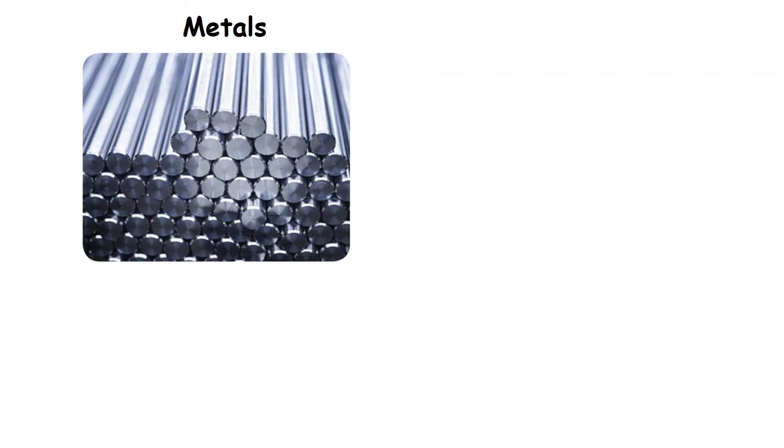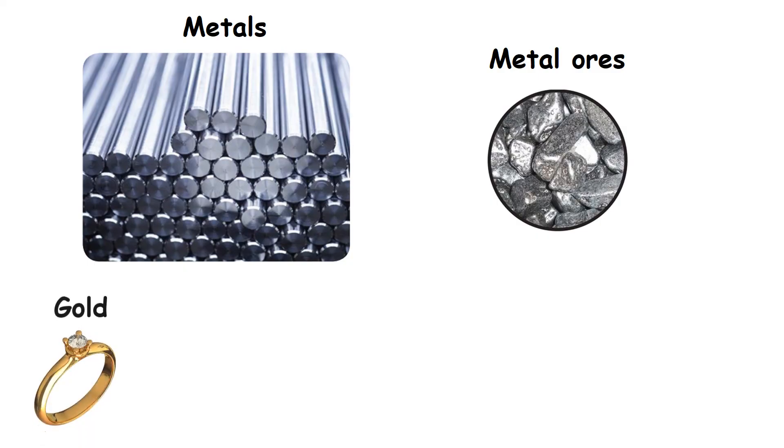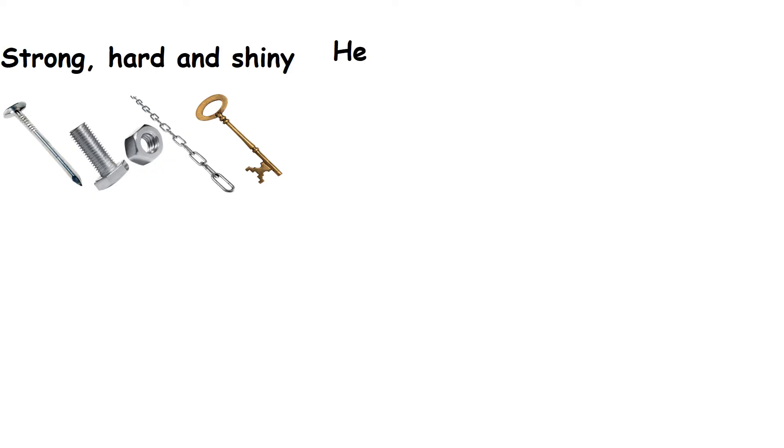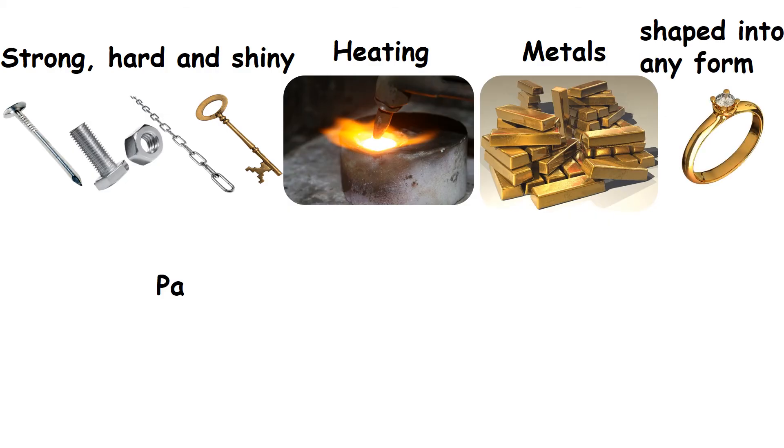Metals. Metals are materials got from metal ores. Example, gold, silver, iron and copper. Metals are strong, hard and shiny. When heated, metals can be shaped into any form from small paper clips to a huge aeroplane.